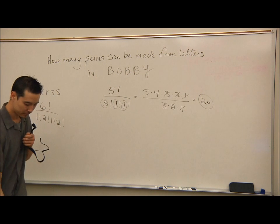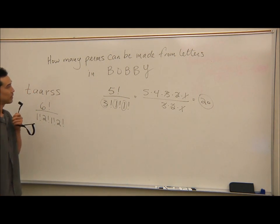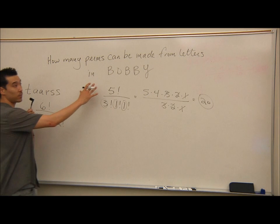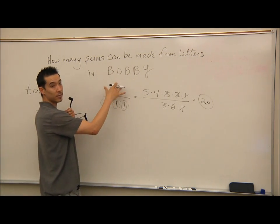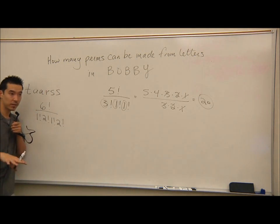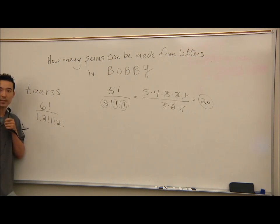So you have 3 permutation rules. Rule 1: if you take all distinct objects, it's just n factorial. Rule 2: if you're taking N objects but only R at a time, use N-P-R. Rule 3: if you have repeats, use n factorial divided by the factorials of the repeat counts. Those are your 3 rules.